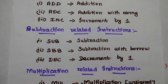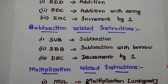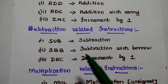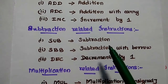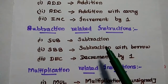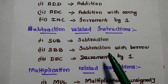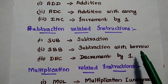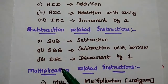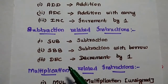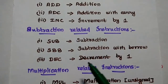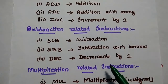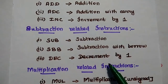Next are Subtraction-related instructions. SUB represents subtraction. SBB means subtraction with borrow. DEC is Decrement — it subtracts one value from the given data.